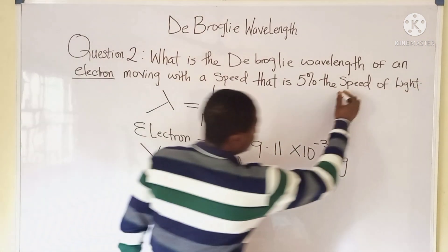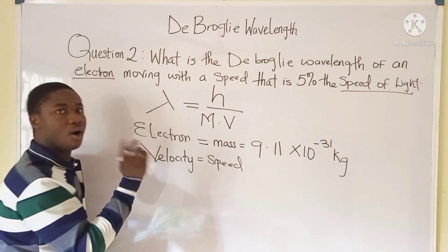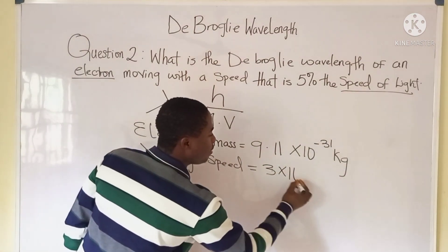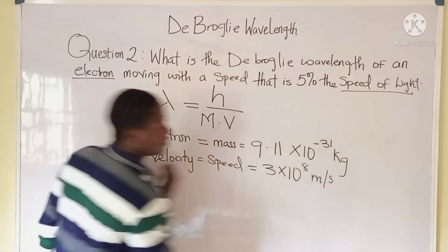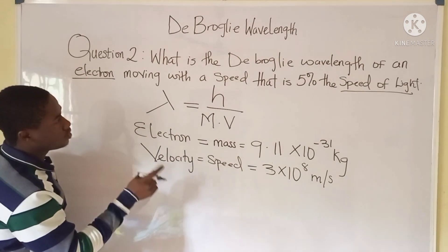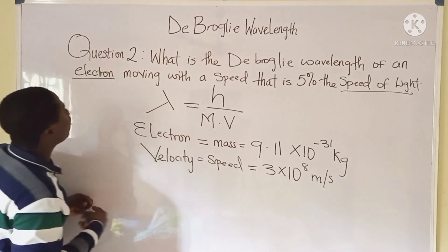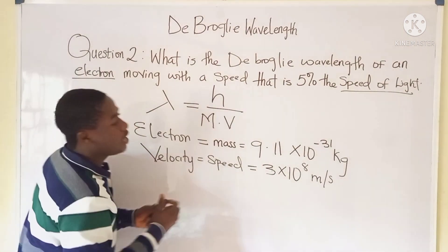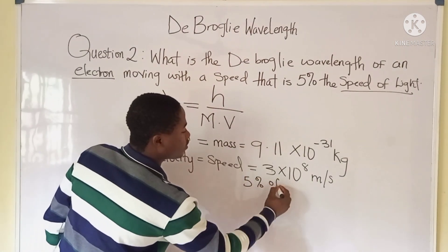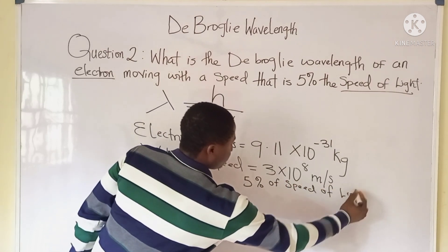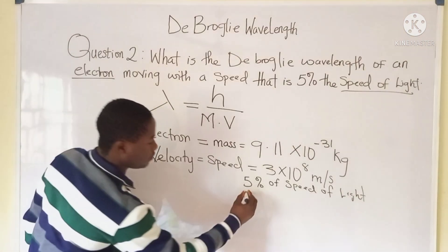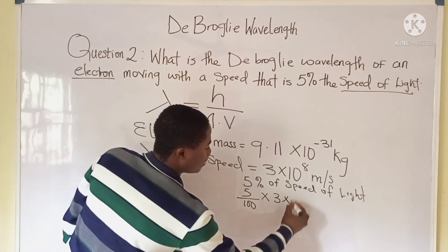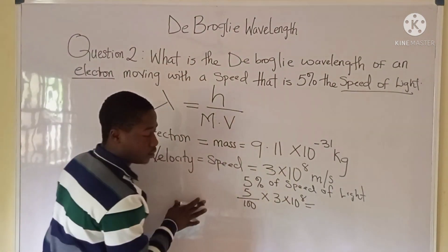The speed of light is 3 times 10 to the power of 8 meters per second. Since the electron moves at five percent of the speed of light, we calculate five percent of that value: 5 over 100 times 3 times 10 to the power of 8 meters per second, which gives us 1.5 times 10 to the power of 7 meters per second.